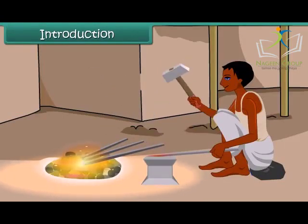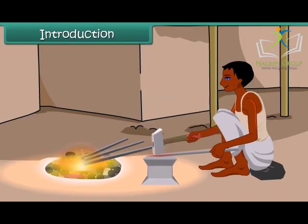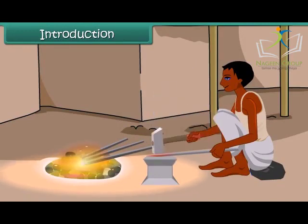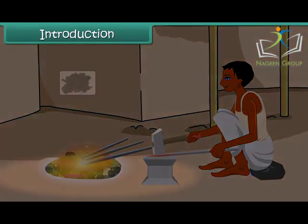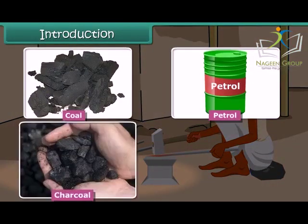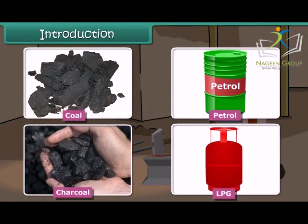The blacksmith burns coal to get hot iron which can be beaten to the desired shape. A variety of fuels is used in daily life such as coal, petrol, charcoal, LPG, etc. Do you know which chemical process is taking place during the burning of these fuels? It is combustion.